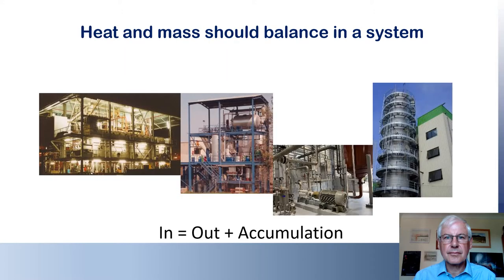In any system such as a vegetable oil processing plant, whatever enters it must be equal to whatever leaves it, plus or minus any accumulation inside. When I said I was thinking of doing a talk on how to make accurate mass balances in vegetable oil refineries, an old hand in the industry said it couldn't be done — but he was not entirely wrong. Even the nuclear reprocessing industry isn't able to keep track of all the plutonium they handle, even though it's one of the most dangerous and expensive materials known to humankind.